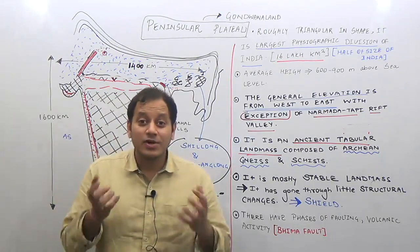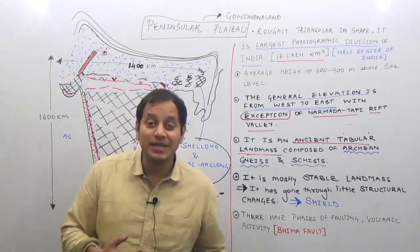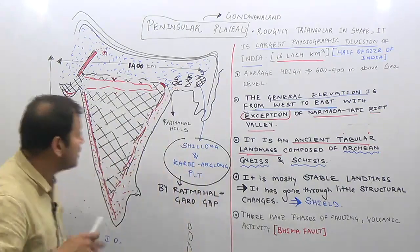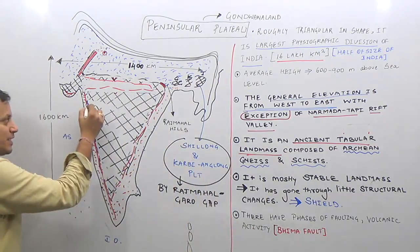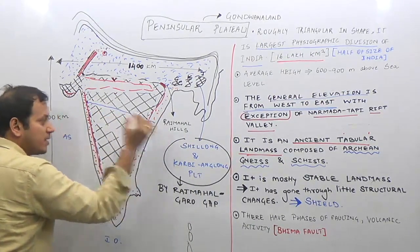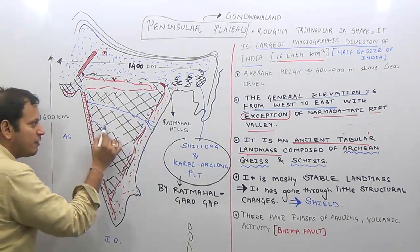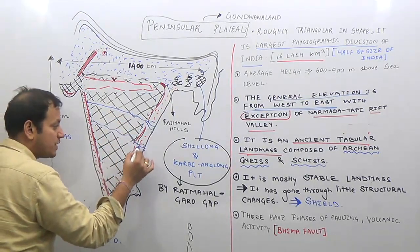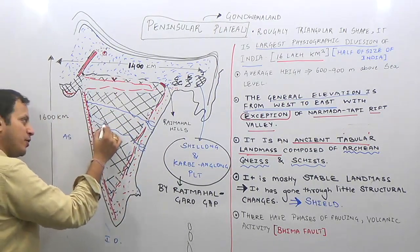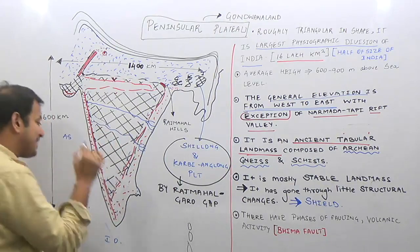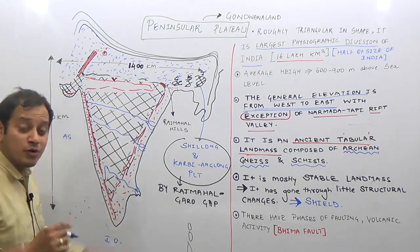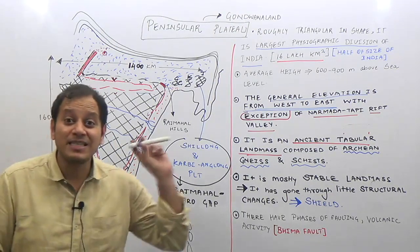What is the major tilt of the peninsular plateau? The River Godavari originates in the Western Ghats and flows into the Bay of Bengal. Similarly, Krishna, its tributary Bhima, and Kaveri all originate near the Western Ghats and flow eastward into the Bay of Bengal.